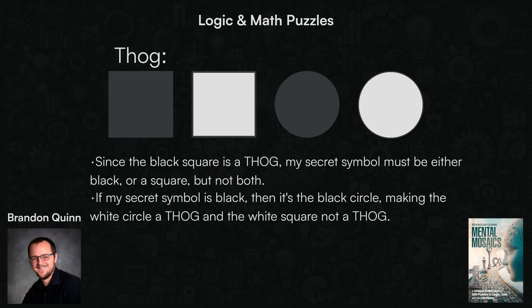If that's the case, then the white circle is also a Thog, sharing the circle property with the black circle. And the white square is definitely not a Thog because it doesn't share either of the properties. Now let's consider the other possibility — the possibility that my secret symbol is a square, not black.